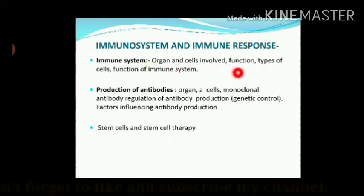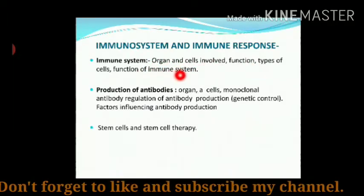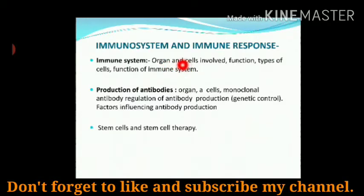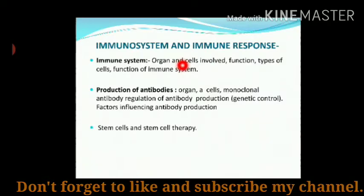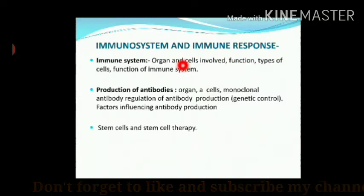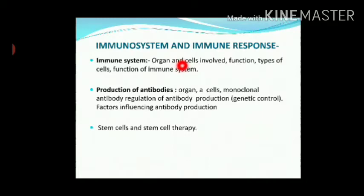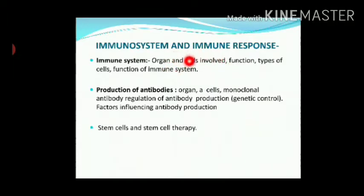The immune system involves organs and cells — their function, types of cells, and function of the immune system. So primary and secondary organs, central and peripheral. Different organs and different cells are there — B cells, T cells, natural killer cells, phagocytic cells, macrophages — all these form part of the immune system and have their own function in fighting against that particular entering pathogen.